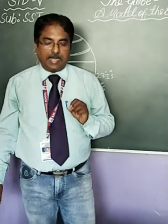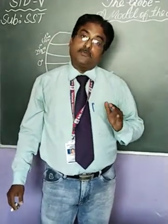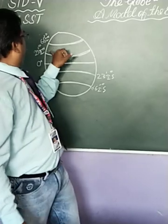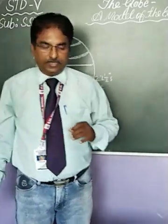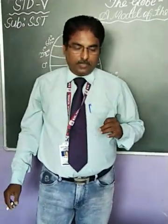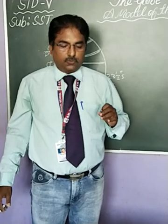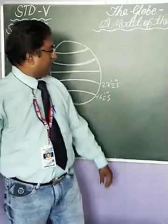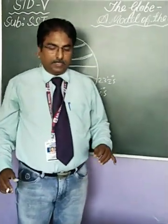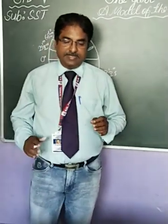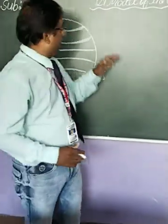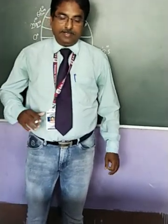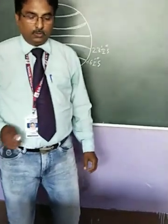The equator divides the earth into two halves: the Northern Hemisphere and the Southern Hemisphere. The Tropic of Cancer lies at 23 and a half degrees North, and the Tropic of Capricorn lies at 23 and a half degrees South. The Arctic Circle lies near the North Pole, and the Antarctic Circle lies near the South Pole.